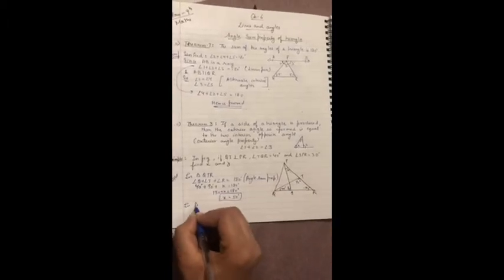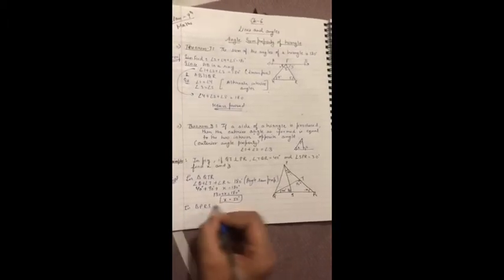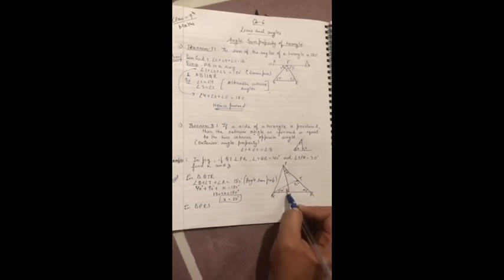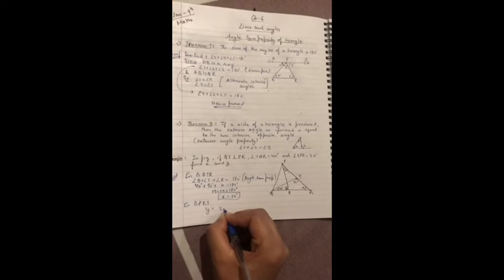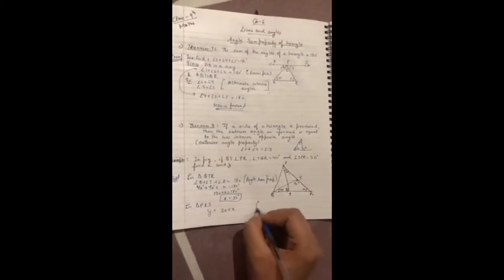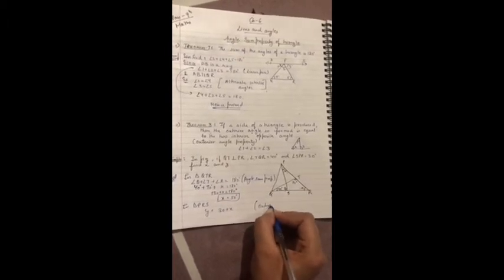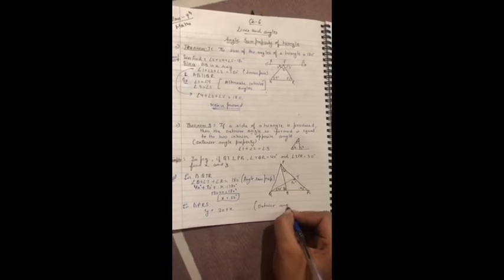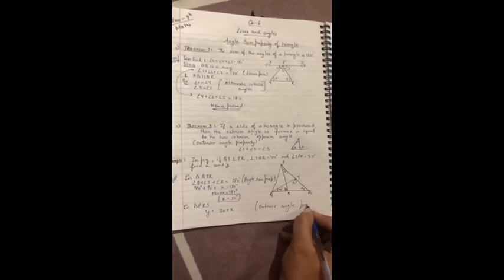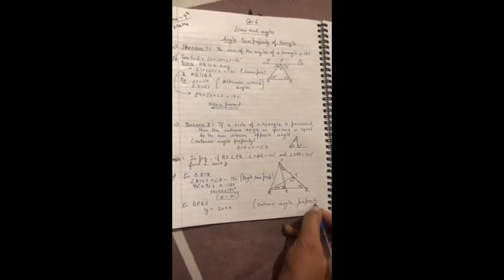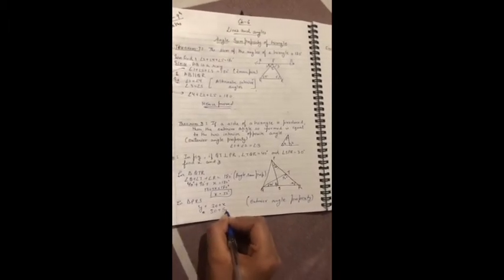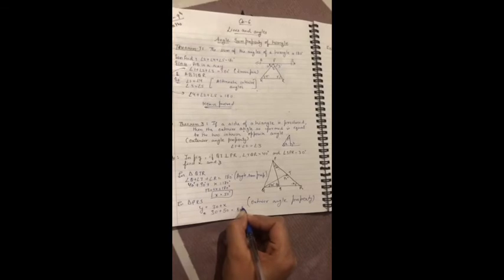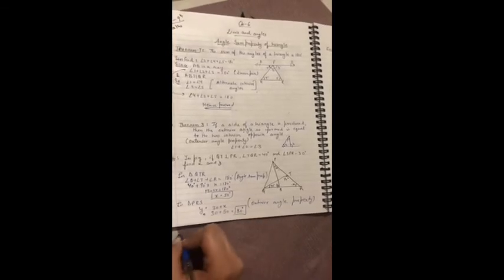Now see, in triangle PRS, this is exterior angle. So that means Y is equal to 30 plus X by exterior angle property. Right, so that means 30 plus 50, that is 80 degree. So Y is 80 degree.